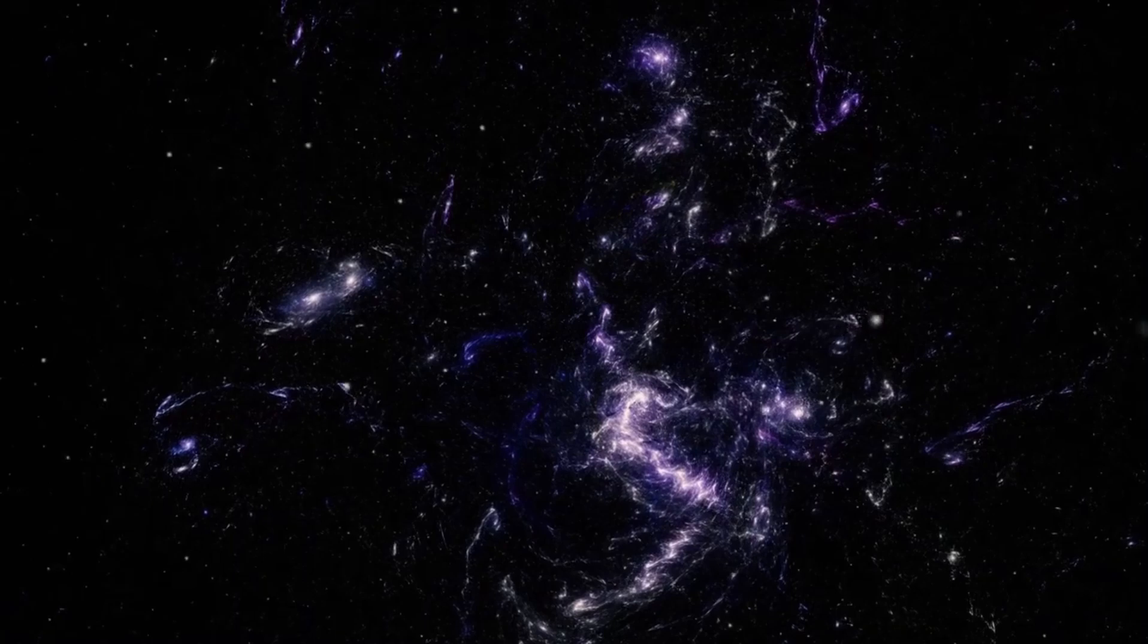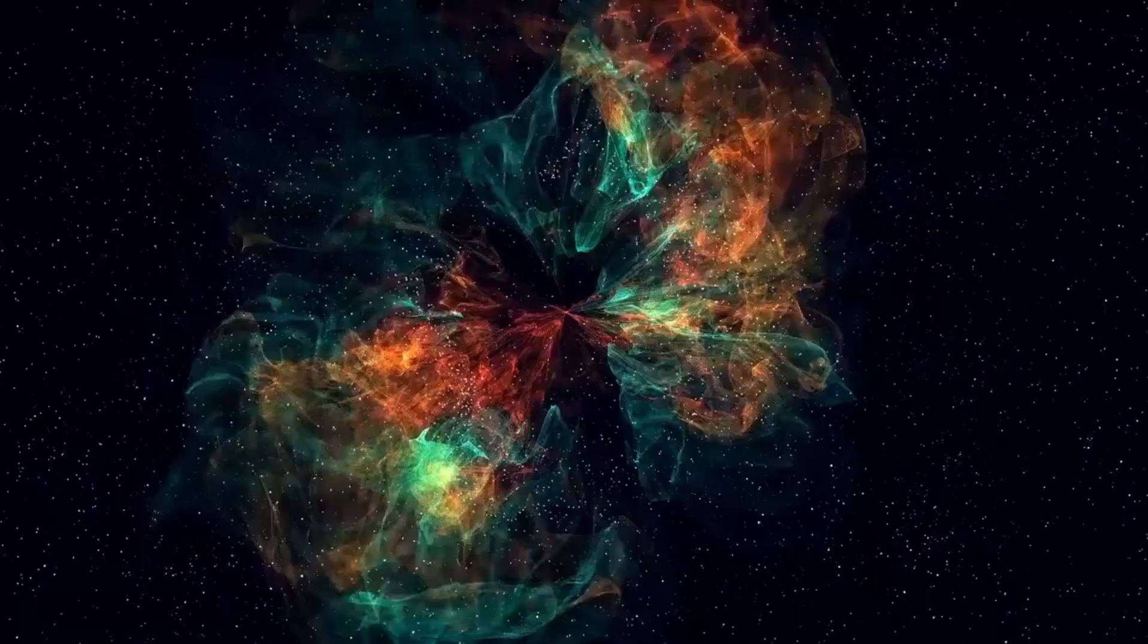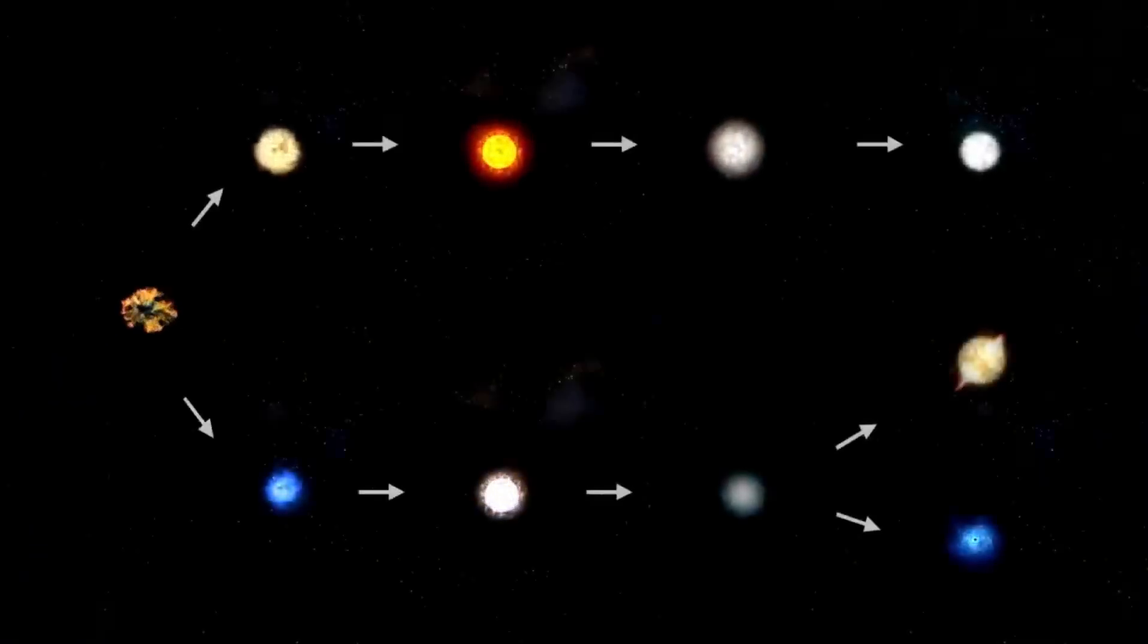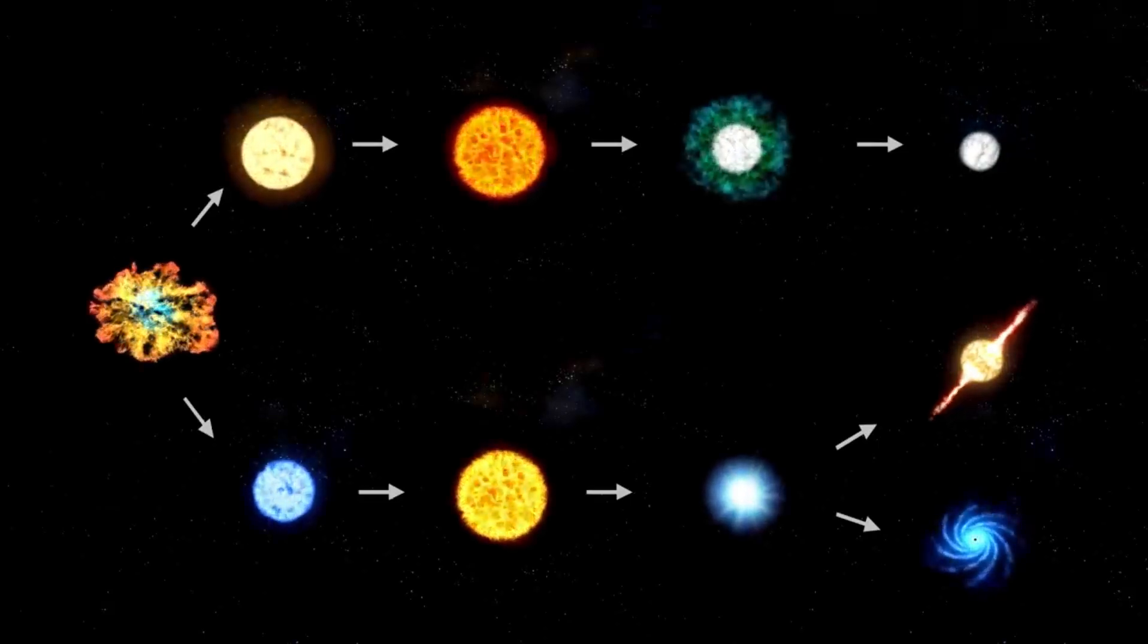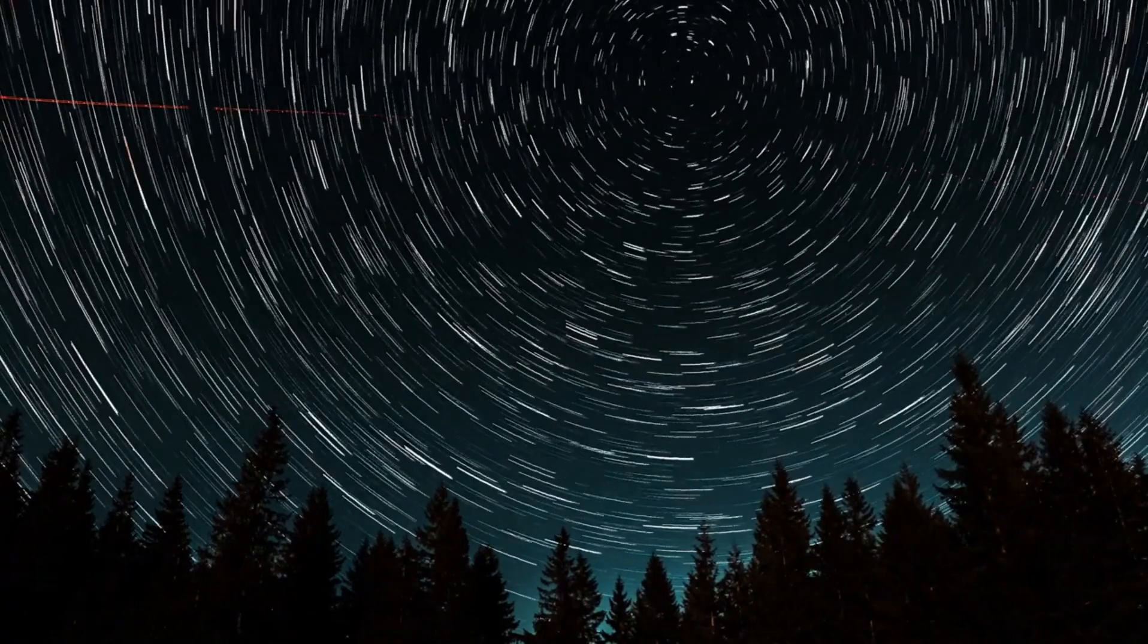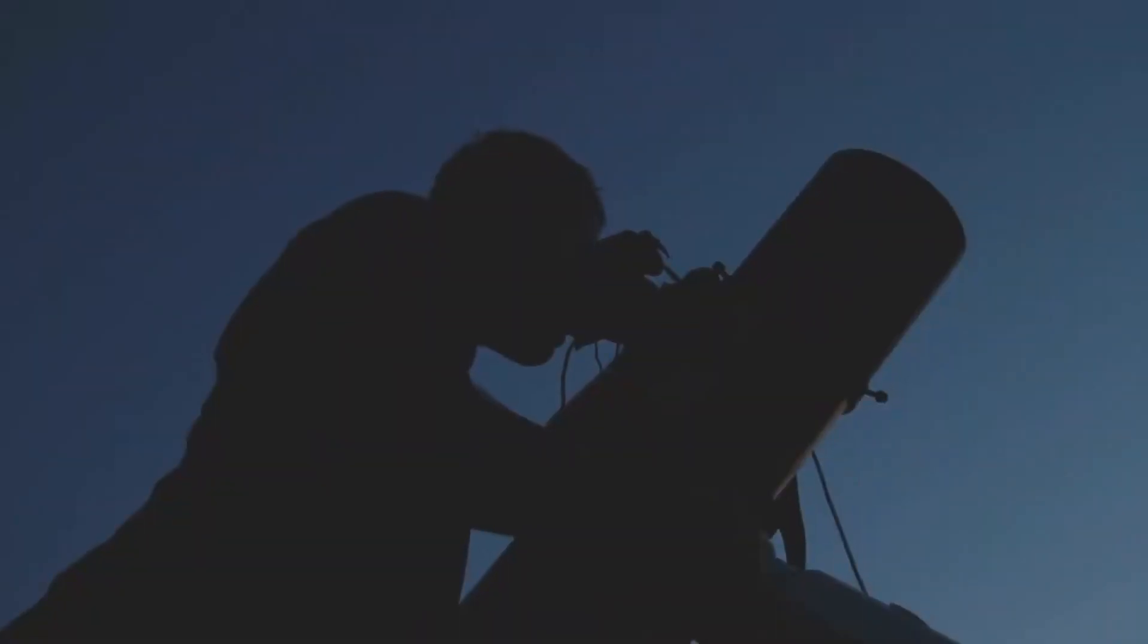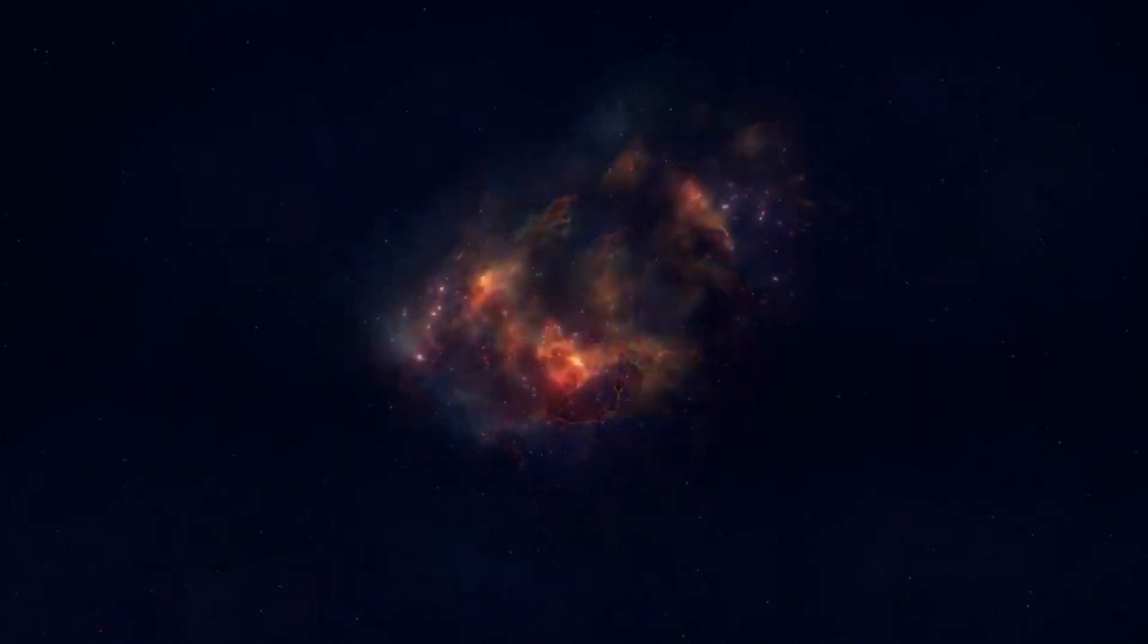If Betelgeuse were to go supernova, it would be a once-in-a-lifetime event for humanity. The explosion would be visible to the naked eye, even in daylight, and would remain bright in the night sky for weeks or even months. The light from the supernova would travel 650 years to reach Earth, meaning that the explosion would have actually occurred in the 14th century. For astronomers, the event would provide an unprecedented opportunity to study the life cycle of massive stars and the processes that lead to supernovae. It would also offer insights into the formation of neutron stars and black holes, the remnants left behind after a supernova.